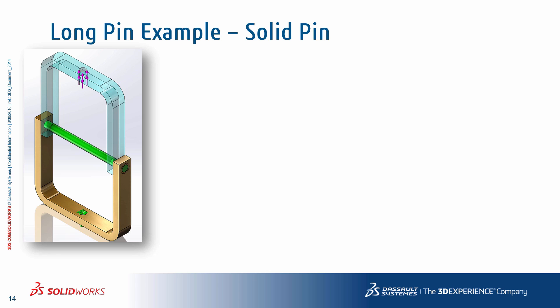Let's take a look at the simple three-part assembly as illustrated. It consists of two C-shaped brackets with a long pin tying them together. In this system, we would expect the pin to bend under the applied load. The question is: can a pin connector model this fastener?